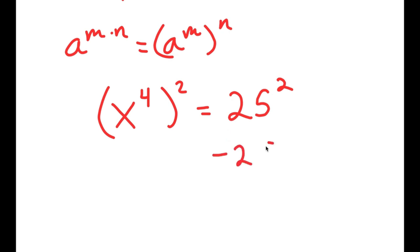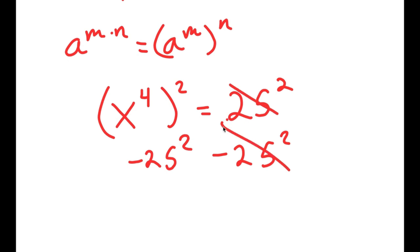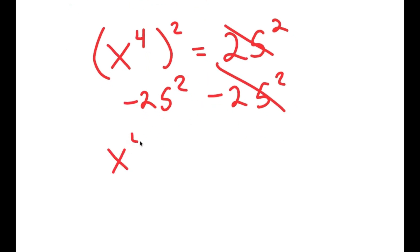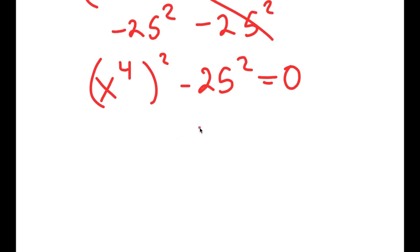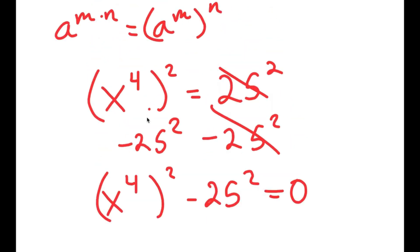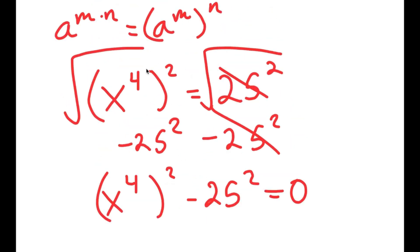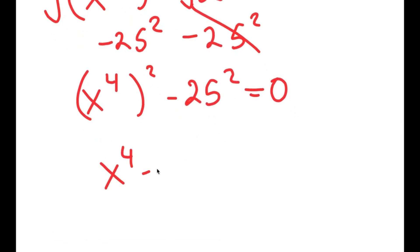Now I'm going to subtract 25 squared on both sides. These two cancel out, and I get x to the power of 4 to the power of 2 minus 25 to the power of 2 is equal to 0. I'm going to take the square root on both sides to cancel the twos out, so I get x to the power of 4 minus 25 is equal to 0.